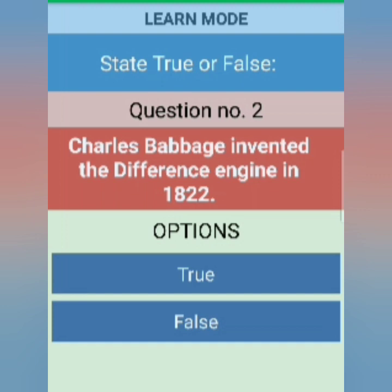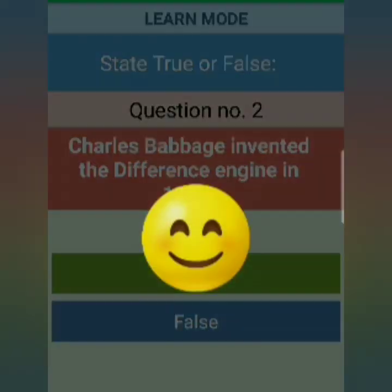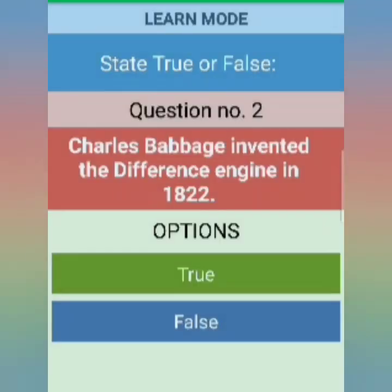The second question is: Charles Babbage invented the Difference Engine in 1822. Yesterday I told you that Charles Babbage invented this computer in 1822. This is also correct — this is TRUE.